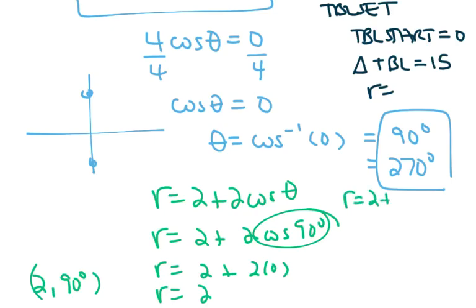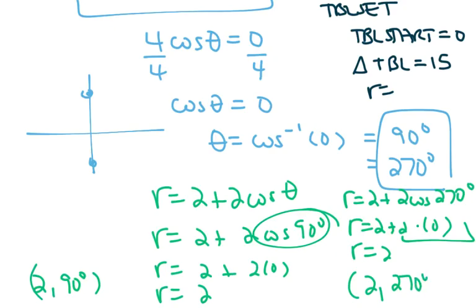And then the other one is when I plug in 270. But the cosine of 270 is 0, and 2 times 0 is 0, but plus 2 is 2. So, the other ordered pair is at 2 comma 270.